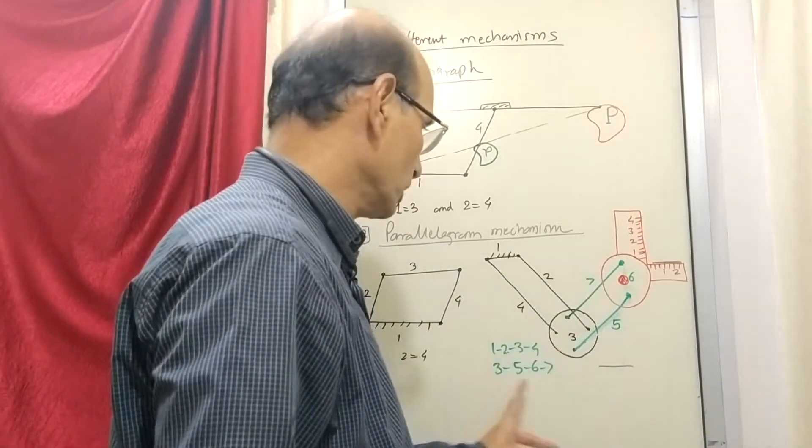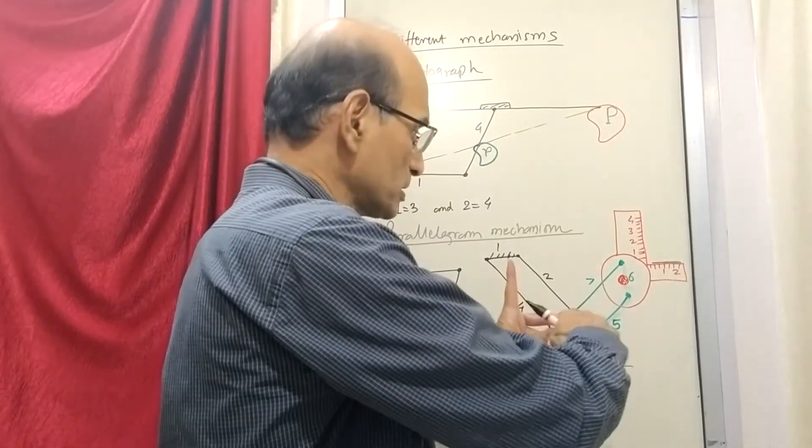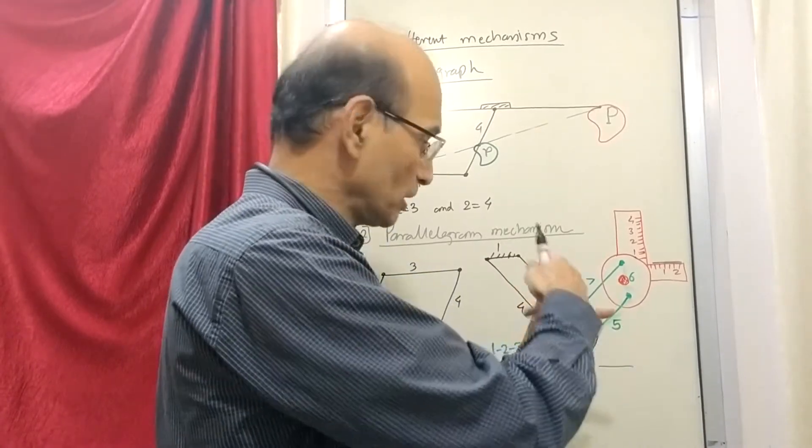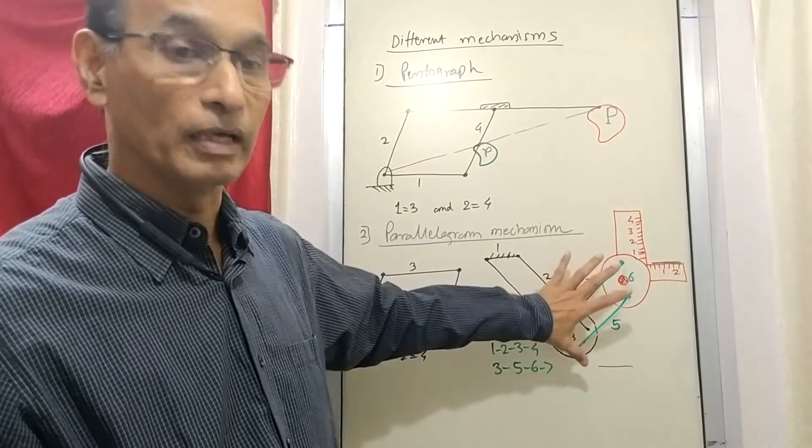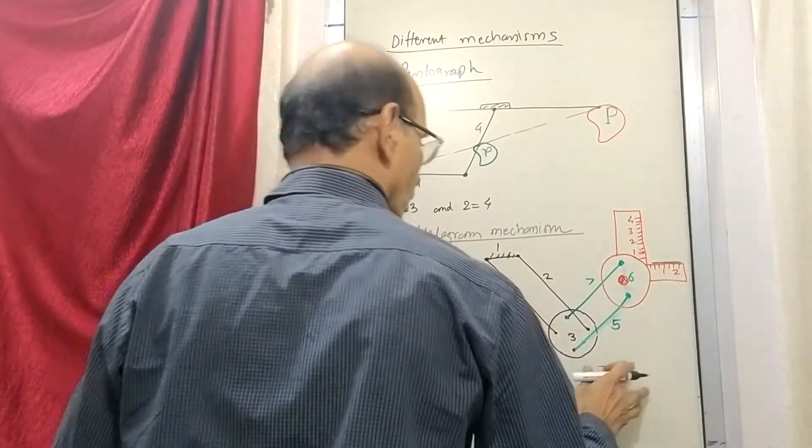So it will just move anywhere on the paper, keeping this always horizontal and this vertical. So this is made use of for preparing the drawing. This becomes a sketch of a mini drafter or a drafting machine.